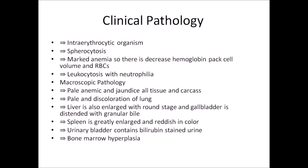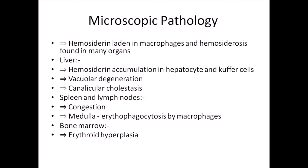Clinical pathology includes intra-erythrocytic organisms, spherocytosis, marked anemia with decreased hemoglobin, packed cell volume and RBC count, and leukocytosis with neutrophilia. Macroscopic pathology shows pale, anemic and jaundiced tissues and carcass, pale and discolored lungs, enlarged liver with rounded edges, distended gallbladder with granular bile, greatly enlarged reddish spleen, urinary bladder containing bilirubin-stained urine, and bone marrow hyperplasia observed on post-mortem.